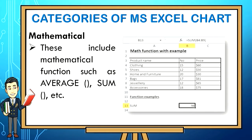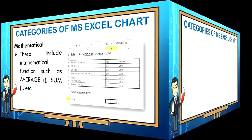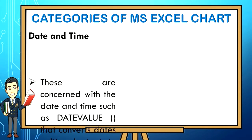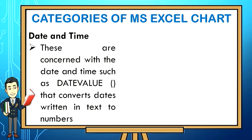Date and time, these are concerned with the date and time, such as date value that converts dates written in text to numbers.